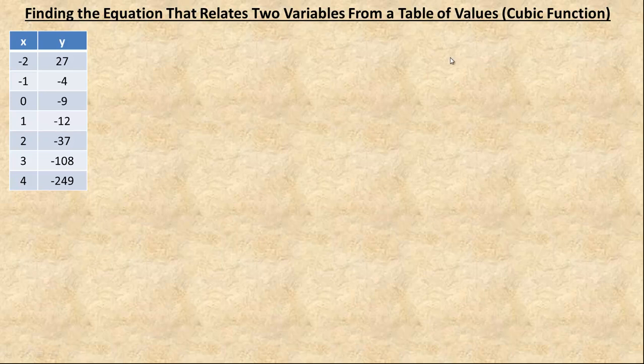In this tutorial we will take a look at how to find the equation that relates two variables from a table if it happens to be a cubic function. This is the third in a series of videos on this same topic. There is another video on my channel if it happens to be a linear function, and one if it is a quadratic — and this is a cubic example. When you look at the table first you wouldn't know whether it is linear, quadratic, or cubic, so you would have to start finding the differences.